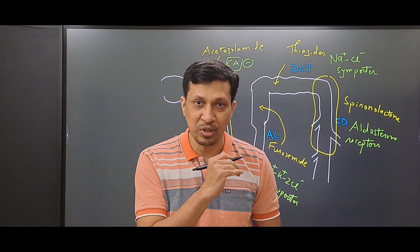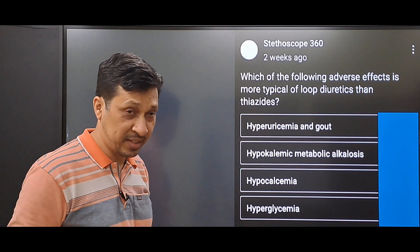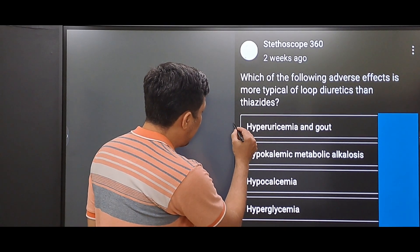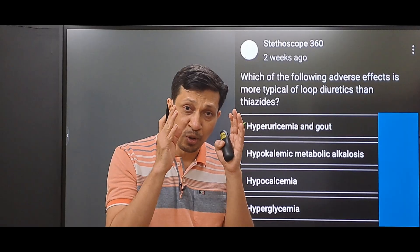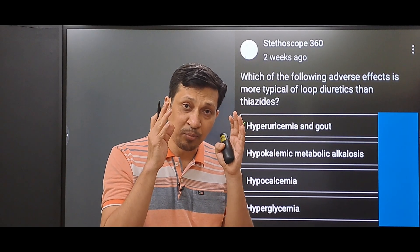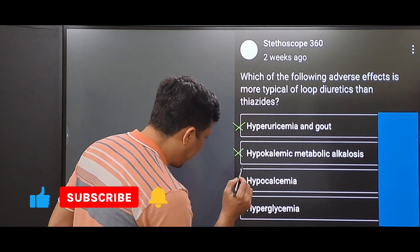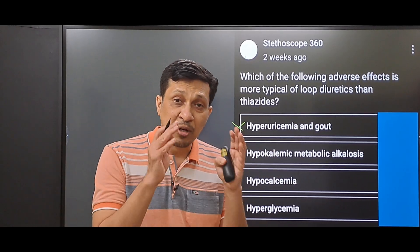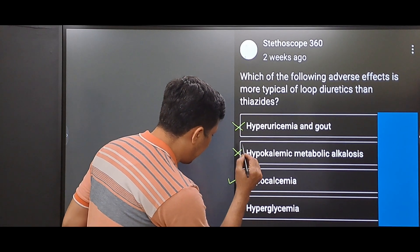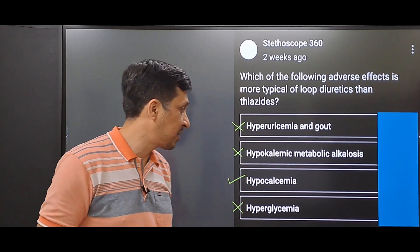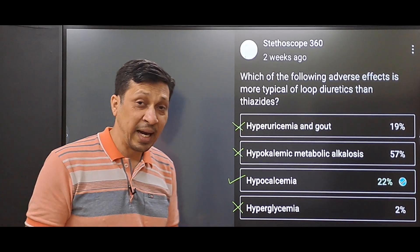MCQ 1: Which of the following adverse effects is more typical of loop diuretics than thiazides? Hyperuricemia is caused by both drugs. Hypokalemic metabolic alkalosis is also caused by both, as both decrease potassium and hydrogen ions. Hyperglycemia is also caused by both drugs. Hypocalcemia, however, is caused only by loop diuretics, while thiazides cause hypercalcemia — so hypocalcemia is the correct answer. Only 22% of 809 people answered this correctly.